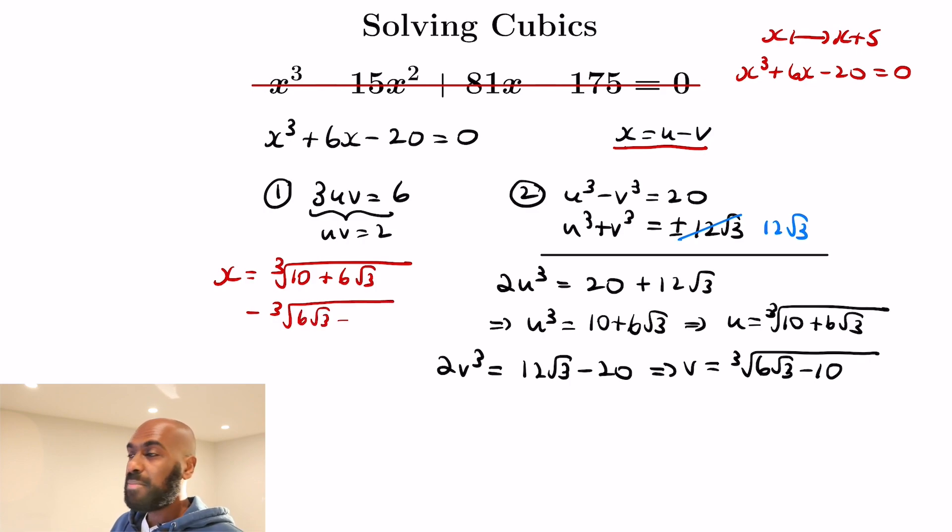But then we have to remember that we shifted by 5 in the beginning to eliminate the x squared term from our original cubic equation, so we subtract 5 to get the root of our original cubic equation. Cool.